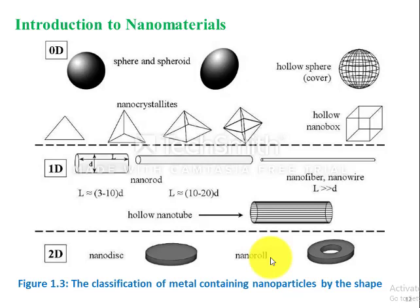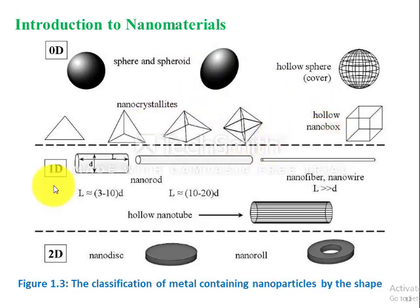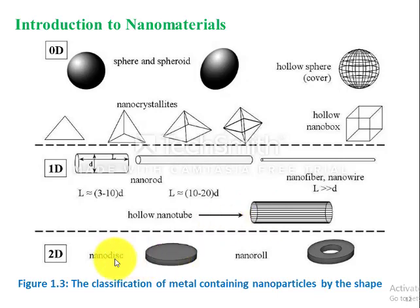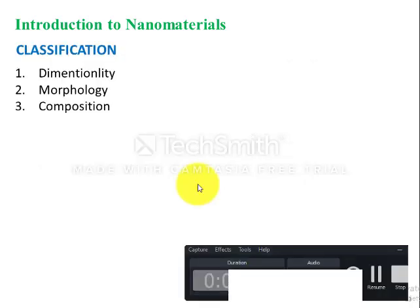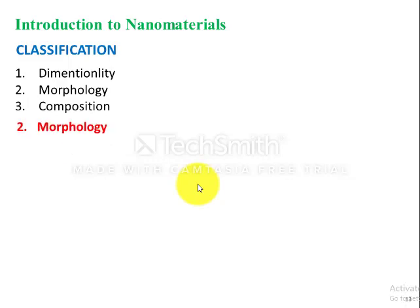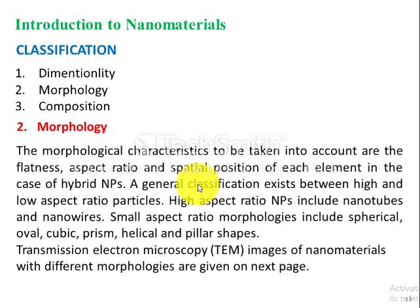Figure 1.3 represents some examples of metal-containing nanoparticles with their shapes. Zero-dimensional nanomaterials can be spheres, spheroids, hollow spheres, nanocrystallites, hollow nanocrystallites, or hollow nano-box shaped materials. One-dimensional metallic materials can be nanorods, nanofibers, nanowires, or hollow nanotubes — hollow meaning empty on the inside. Two-dimensional metal-containing nanoparticles can be nanodiscs or nanoribbons.